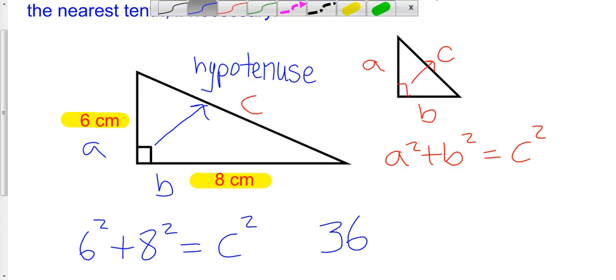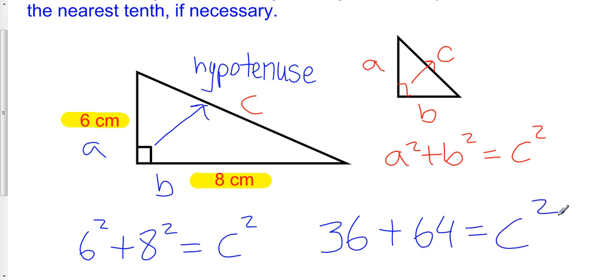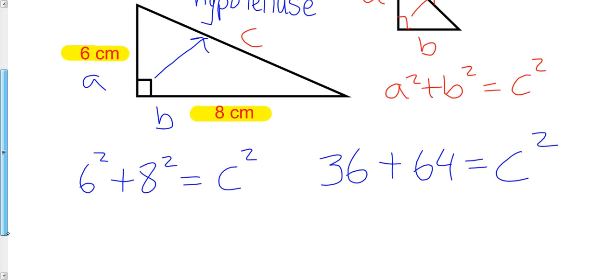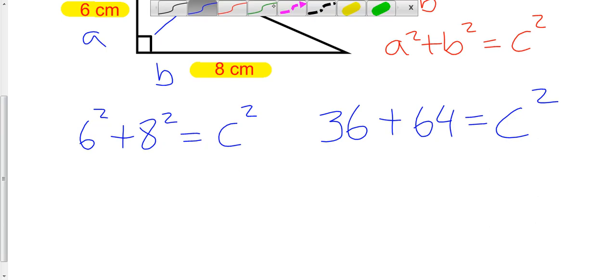We can do the same thing for 8, and we'll find out that it's 64. And that's equal to C squared. So what is 36 plus 64? 36 plus 64 is 100. So 100 is equal to C squared.